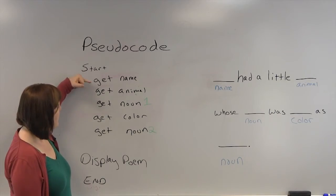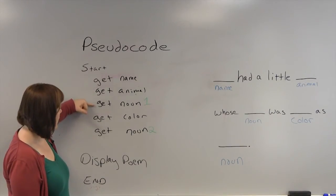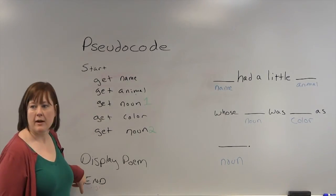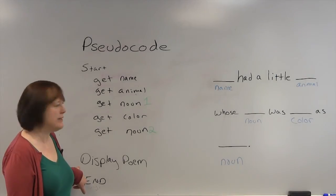So our start would be get name, get animal, get noun, get color, get noun. And our last item would just be to display the poem, filling those items in.